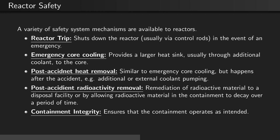A variety of safety system mechanisms are available to reactors. Reactor TRIPS shut down the reactor, usually via control rods, in the event of an emergency. Emergency core cooling provides a larger heat sink, usually through additional coolant to the core.